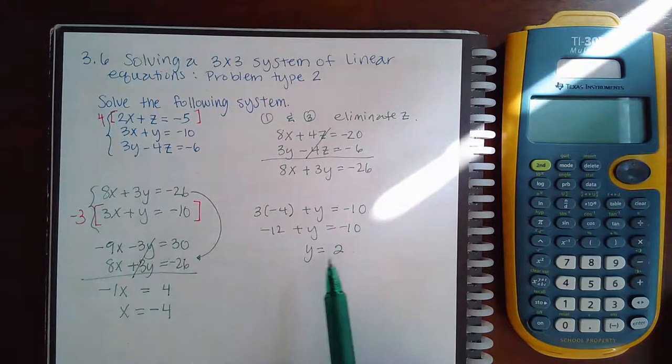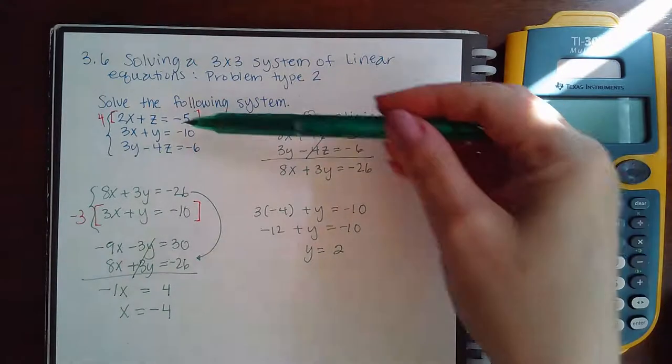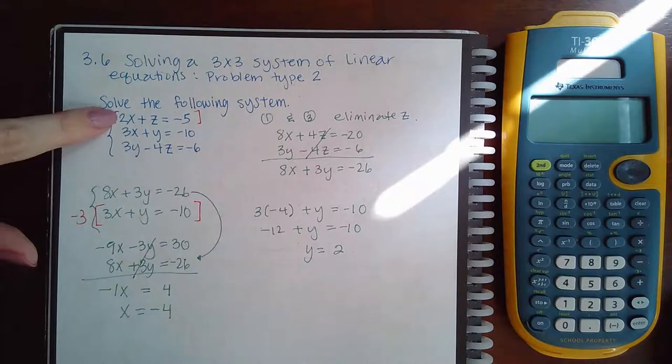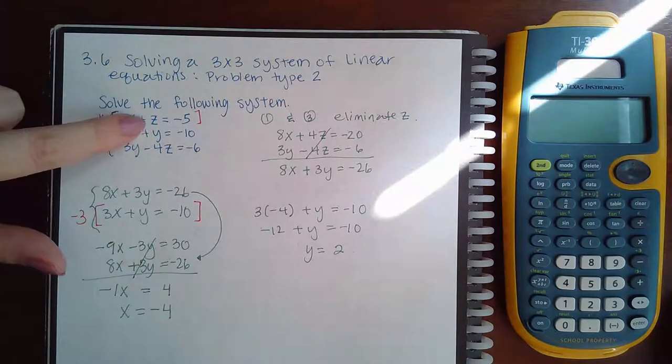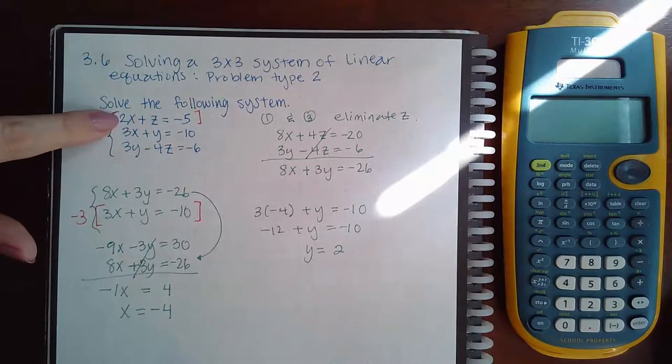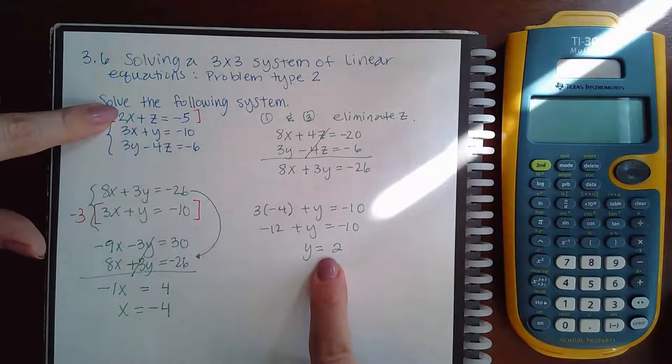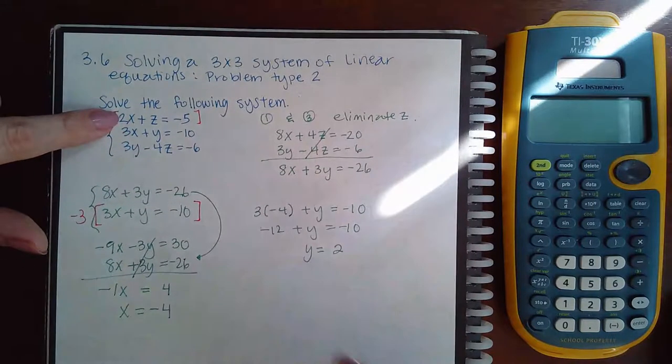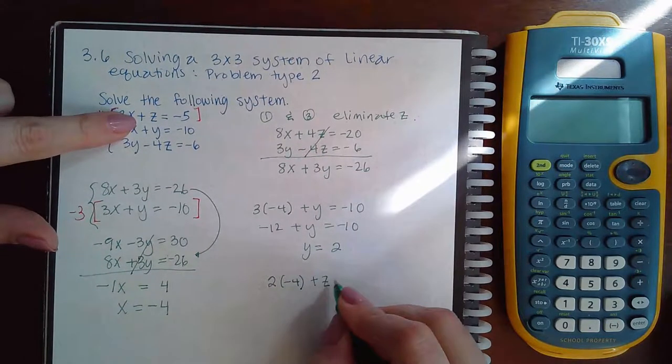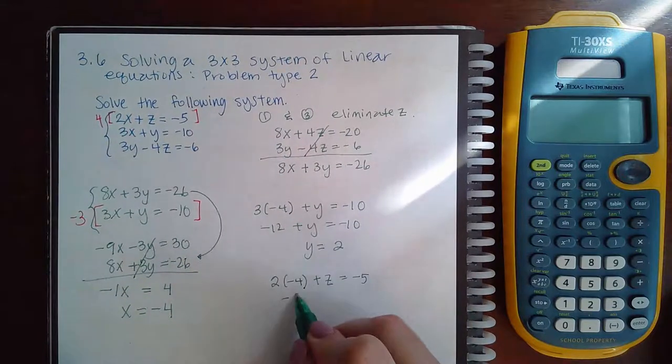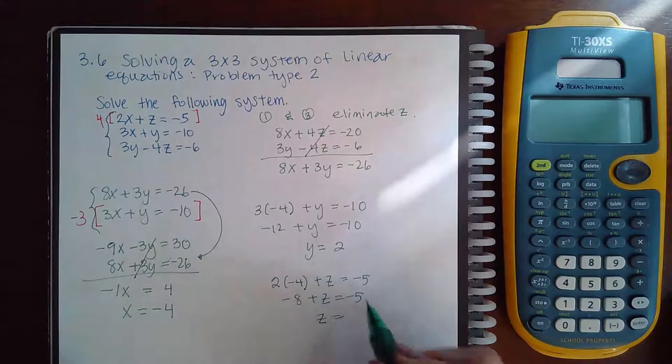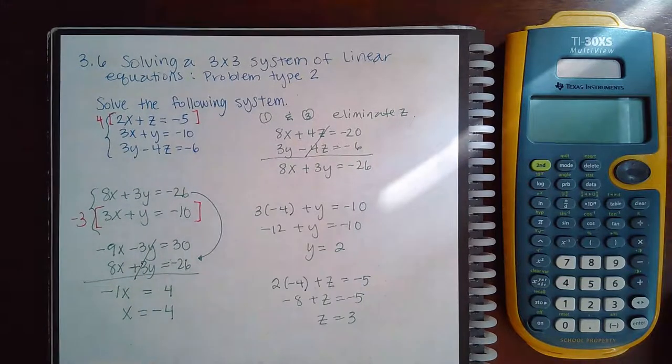Then I can take one or both of these and plug it into one of the originals to find z. I like the top equation because if you notice z doesn't have a number in front which means I won't have to divide later. So I'm going to use the top equation. Notice that in the top equation there's no y's so I do not have to plug in this number. The only number I need to plug in is x. So 2 times the x value we found plus z equal to negative 5. That's negative 8 plus z equal to negative 5 and then if I add 8 over I get a positive z equal to a positive 3.